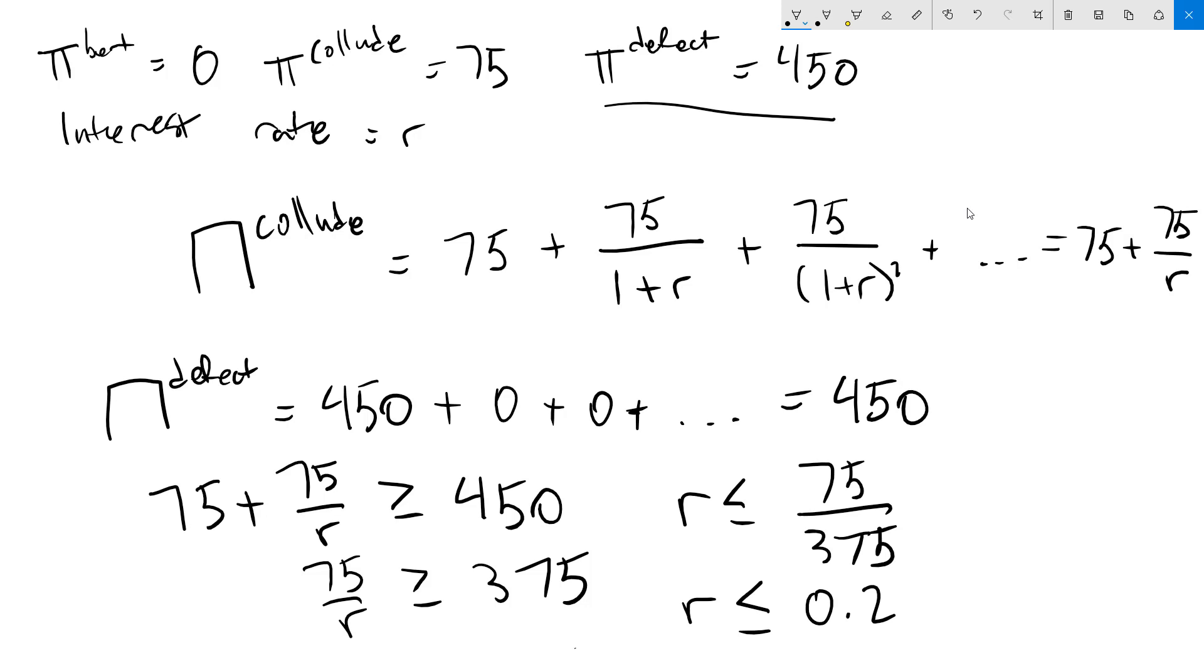Remember that as the interest rate goes up, these future payoffs are worth relatively less. When the interest rate is low, those future payoffs are worth more. 20% is the break-even point between getting 75 forever and getting that instant burst of 450. That is the cooperative Nash equilibrium in an infinitely repeated Bertrand game.